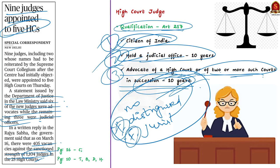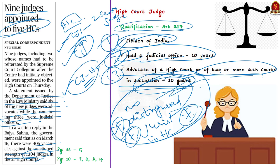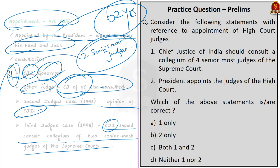For appointment of the Chief Justice of a High Court, the Chief Justice of India (who must consult two senior-most judges of the Supreme Court) and the Governor of the concerned state are consulted. For permanent judges, the Chief Justice of India, the Governor of the state, and the Chief Justice of the High Court are all consulted — and here too, the CJI must consult at least two senior-most judges. According to Article 217, High Court judges hold office until they attain the age of 62 years.